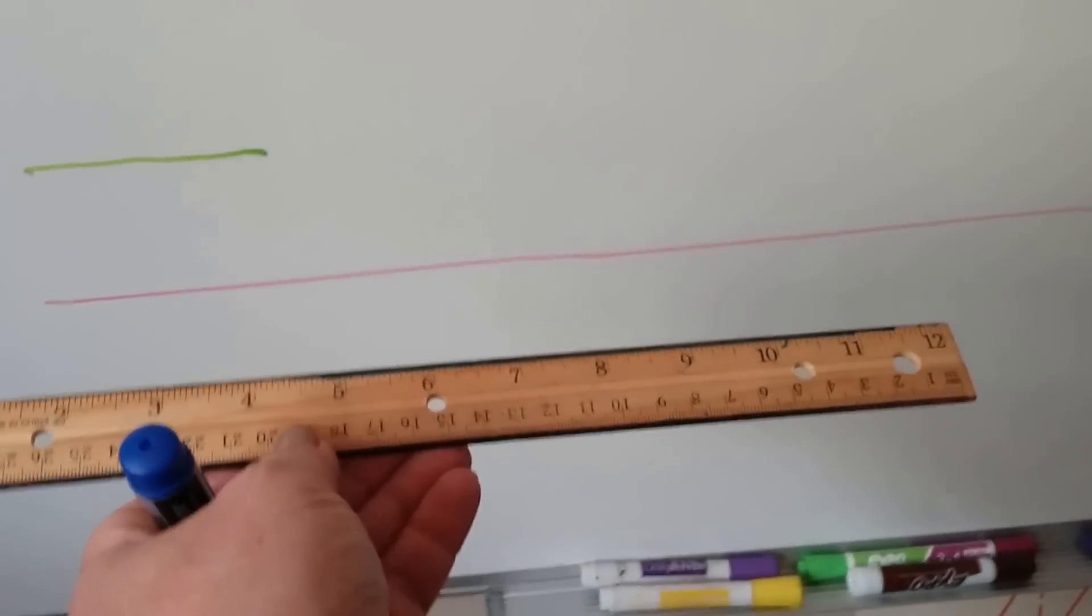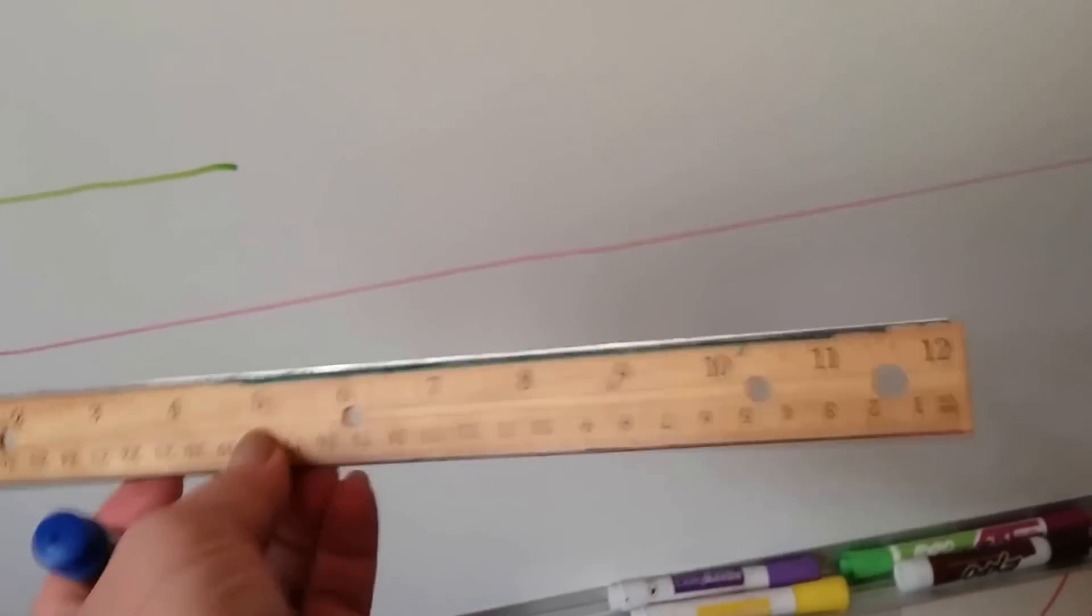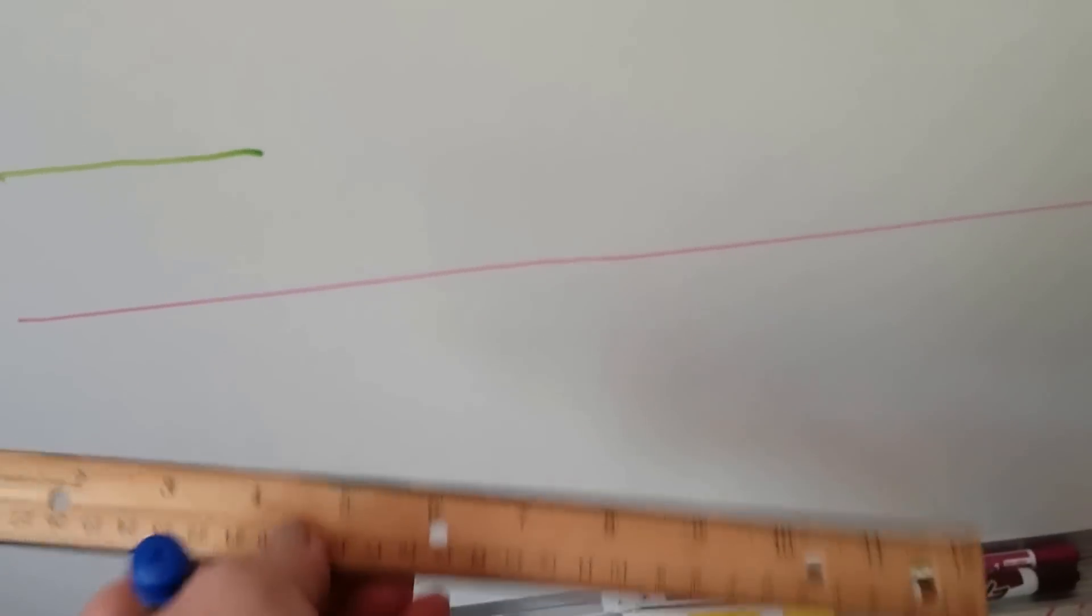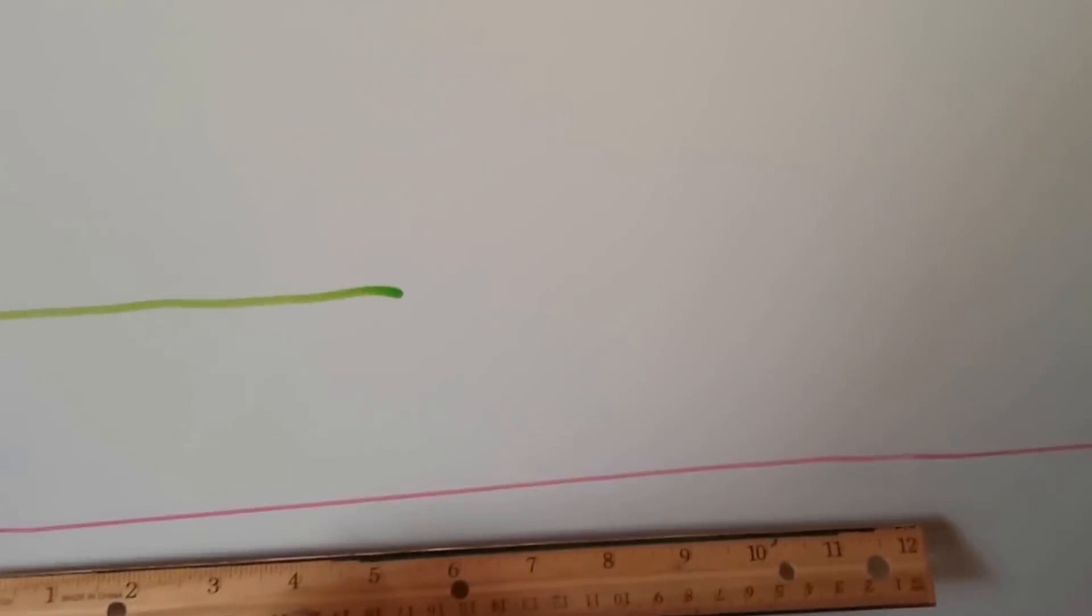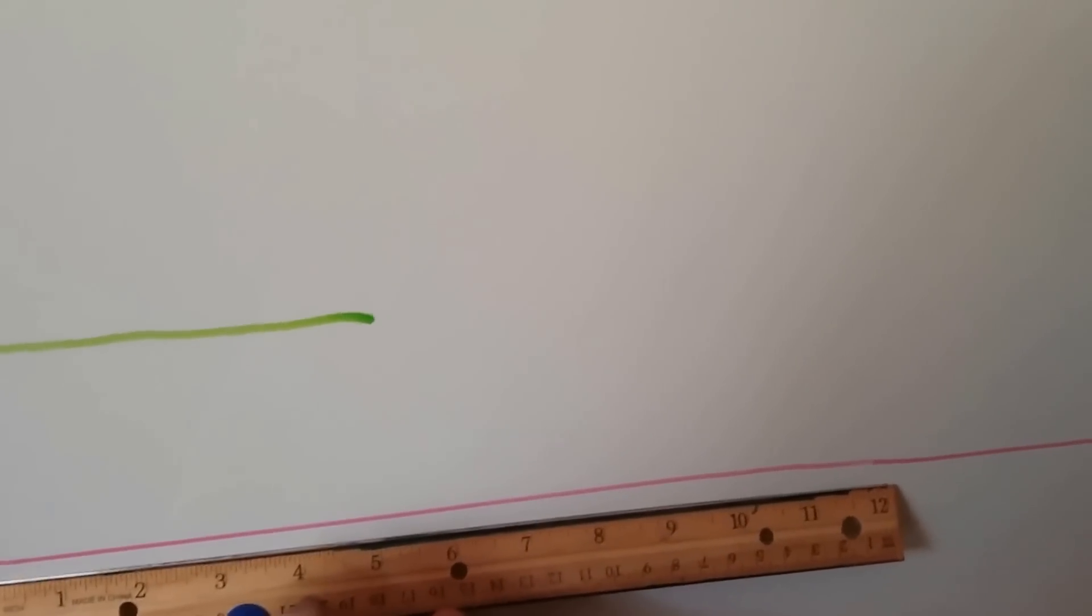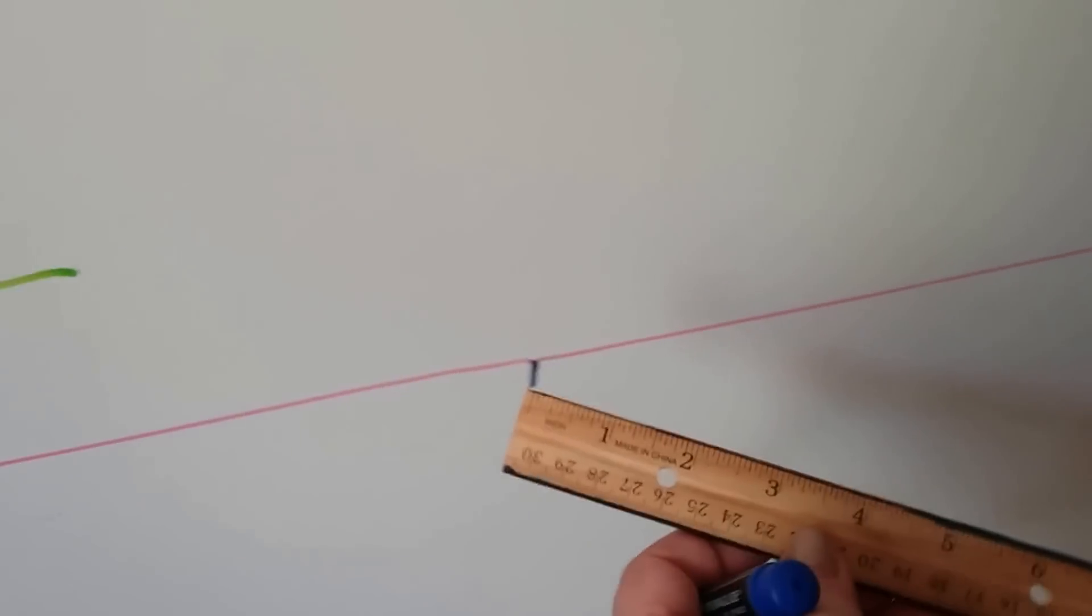Now, look at the pink line. Oh, that pink line is longer than my ruler. And how can I measure it with this ruler if it's longer than my ruler? Well, what we can do is we can put the ruler right here and we can mark where the ruler ended. So, that was 12 inches. Then we can take the end of the ruler and put it right here and measure it again.